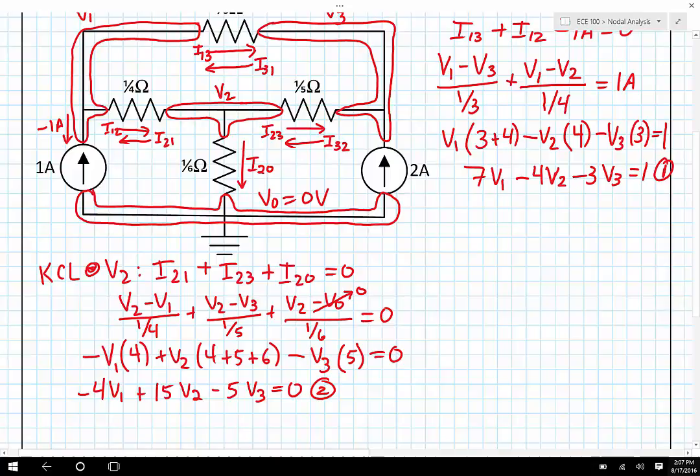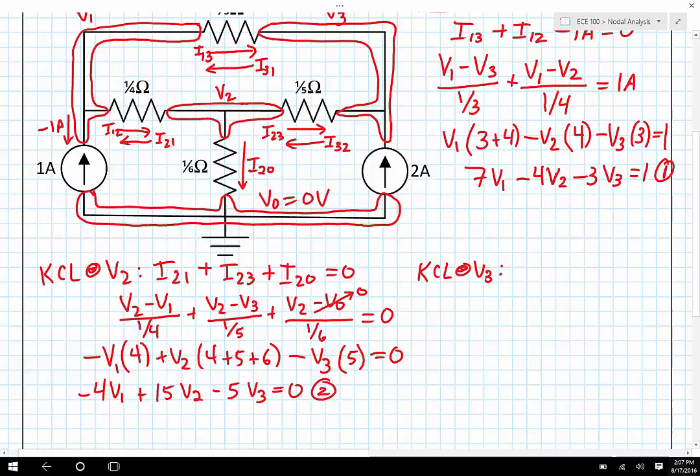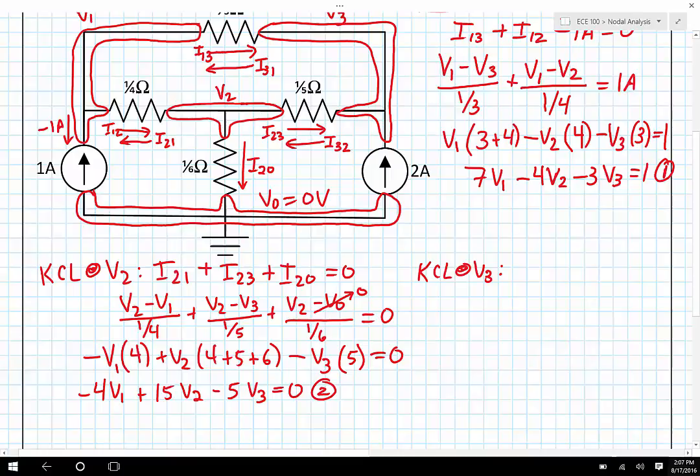And then I can do Kirchhoff's current law at V3. So at V3, I can see that I sub 3,1 is leaving. I can see that I sub 3,2 is leaving, and although there's 2 amps flowing in, I could also think of that as negative 2 amps flowing out. So I'll say minus 2 amps is leaving, and that is equal to zero.